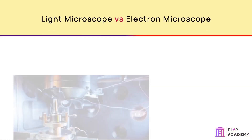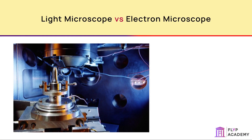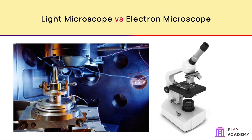An electron microscope is a much bigger device than a light microscope. It uses electron beams to view samples, whereas a light microscope uses visible light. A light microscope is much smaller and more portable. The samples viewed by a light microscope can be living, but those viewed with an electron microscope cannot. The images generated by an electron microscope are 3D and can give detail about the surface texture. The magnification of an electron microscope is much higher than a light microscope and the resolution is also much better.